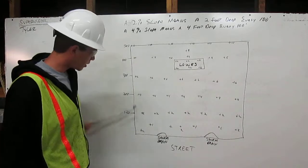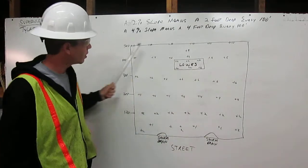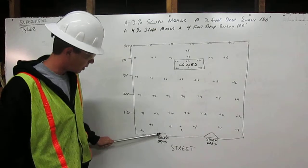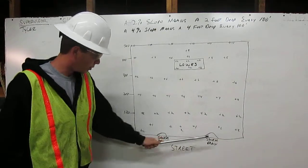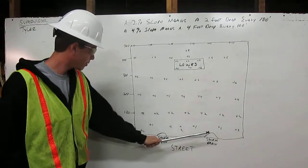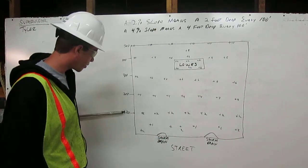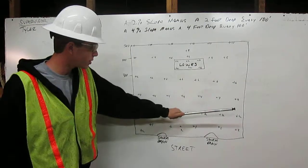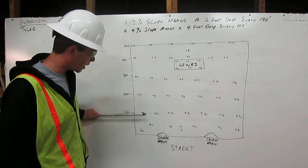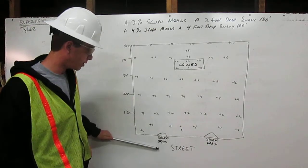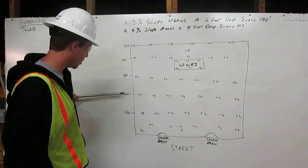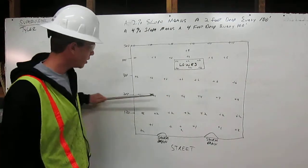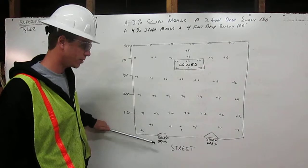Here's our parking lot example. We have our street down here and we have our 2 storm drains right here. So at our 100 foot mark we are going to shoot our grade all the way across and get it 2 feet higher than the street. At our 200 foot mark we are going to shoot our grade across and get it 4 feet higher than our street.